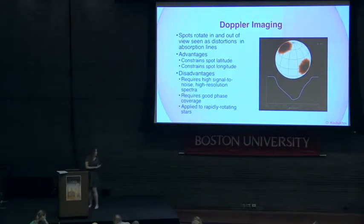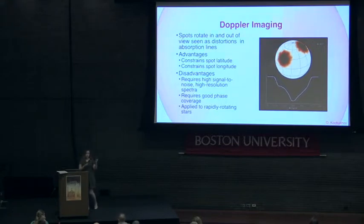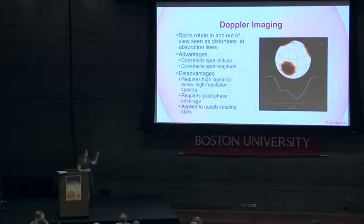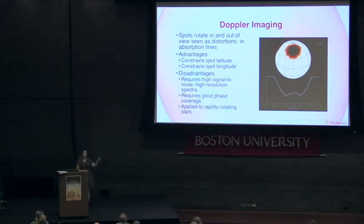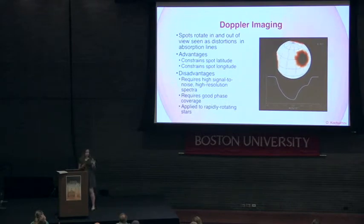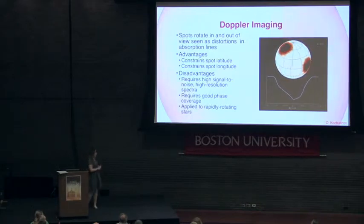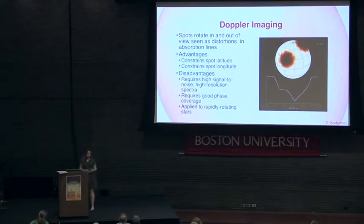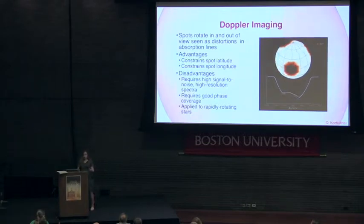The next method is Doppler imaging, which is a bit more complicated. Features on the surface rotate and affect the absorption lines. Features near the equator affect the absorption line across its full width, whereas features near the pole affect more of the core of the line — so we can start distinguishing latitude information. However, there are still degeneracies identifying which hemisphere spots are in, and it requires high-resolution, high signal-to-noise spectra with good phase coverage and rapidly rotating stars.